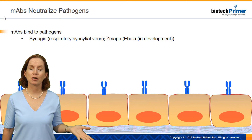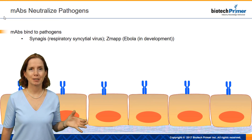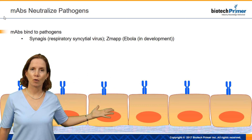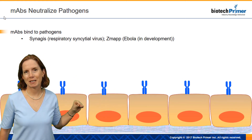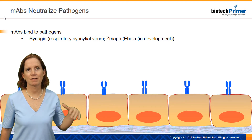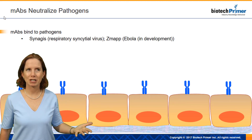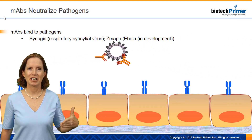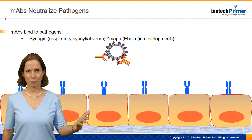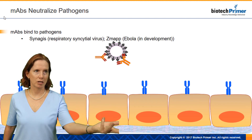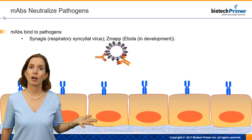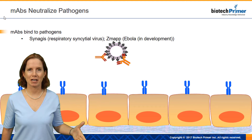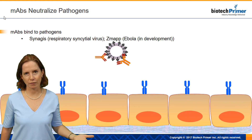We can also have antibodies designed to neutralize pathogens. Just like our own immune system naturally produces antibodies that prevent viruses from infecting lung cells, we can design a drug that specifically prevents infection — for example, with respiratory syncytial virus. There's already a drug on the market that does that, Synagis, and ZMapp is an antibody in development to try to prevent Ebola infection.